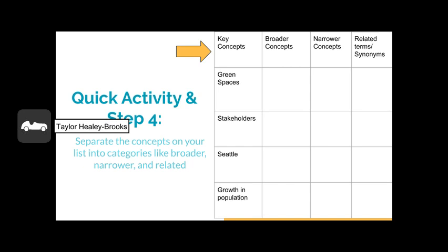Now we're going to do a quick activity alongside step four. Using the key concepts identified in step two — green spaces, stakeholders, Seattle, and growth in population — and the list of terms we generated in step three, we are going to organize them into broader concepts, narrow concepts, and synonyms. You can do this with a piece of paper and pen or just in your head. On the next slide, you will see how the terms are organized and be presented with a more holistic view of the research topic.